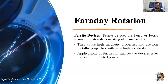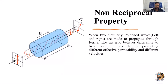Now let's see how Faraday rotation is applicable in this ferrite device. We are considering a cylindrical ferrite device through which we are making an electromagnetic signal pass. The signal is considered in such a way that two circularly polarized waves propagate through this ferrite material, which is considered as split into two halves.